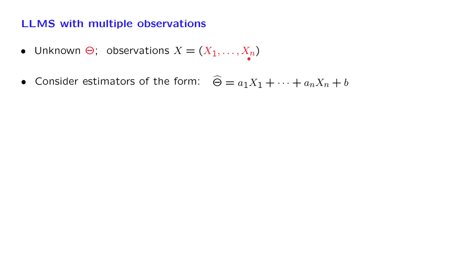We have presented the complete solution to the linear least mean squares estimation problem when we want to estimate a certain unknown random variable on the basis of a different random variable x that we get to observe. But what if we have multiple observations? What would be the analogous formulation of the problem? Here is the idea.